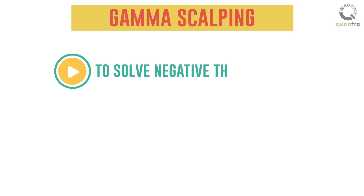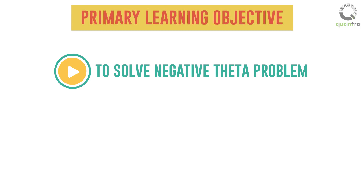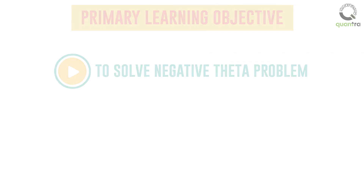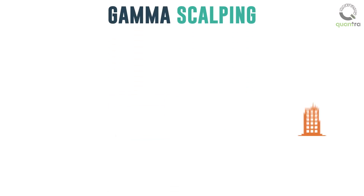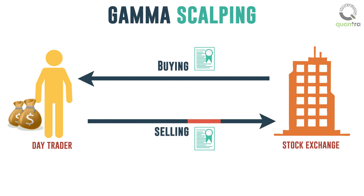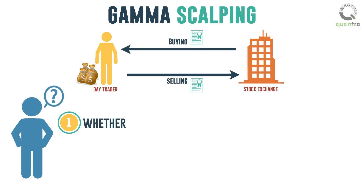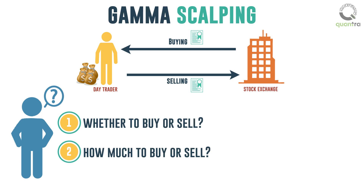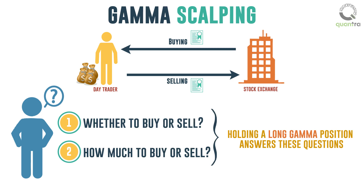We will implement a Gamma Scalping Trading Strategy to solve the negative Theta problem — this is our primary learning objective in this video lecture. The name Gamma Scalping comes from two different concepts. Scalping means repeatedly buying and selling stocks with a goal of obtaining daily profits. This is something day traders generally do in the markets, but the key question is whether to buy or sell, and how much. Holding a long Gamma position answers these questions — hence the name Gamma Scalping.